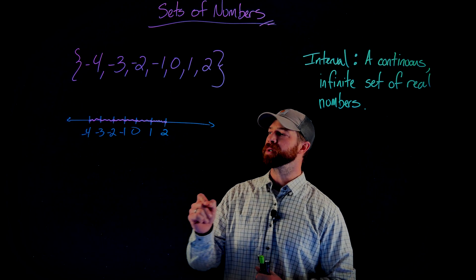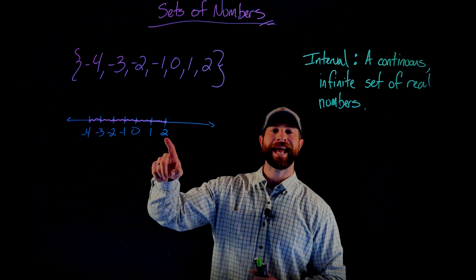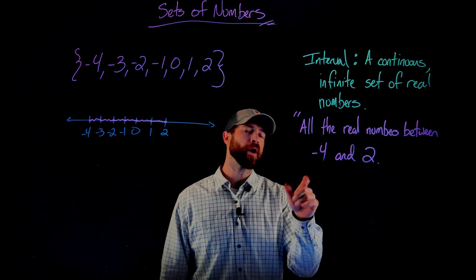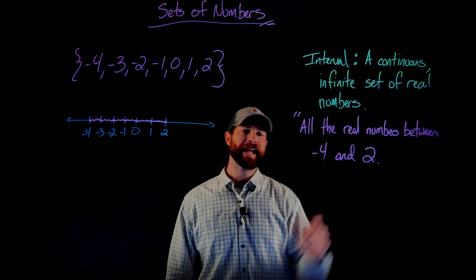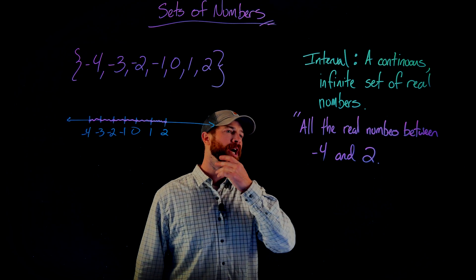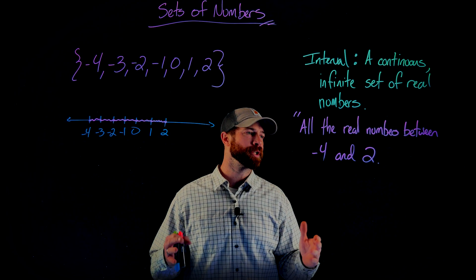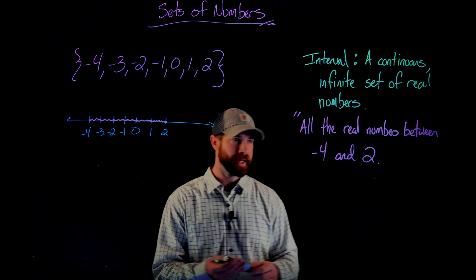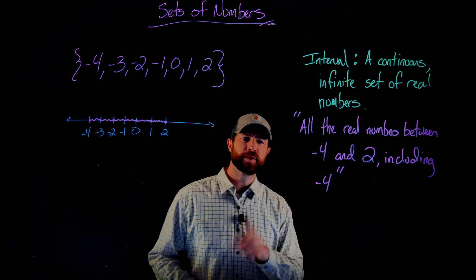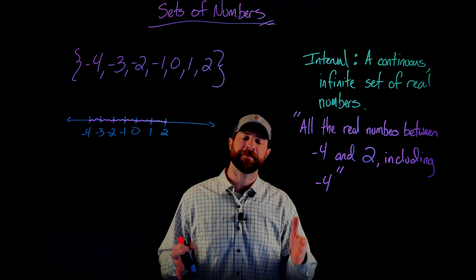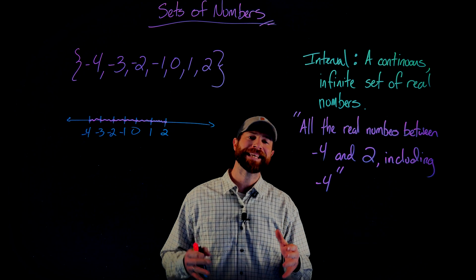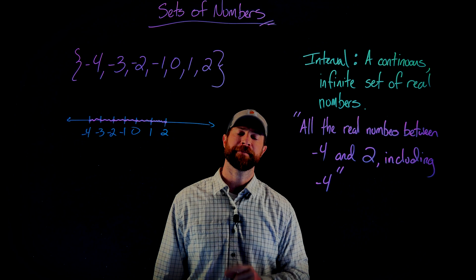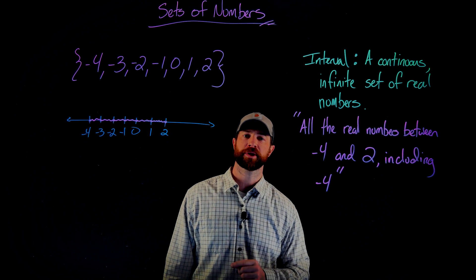I want to describe all the real numbers between negative 4 and 2. There is a little ambiguity with this statement — the question is, do I also want to include negative 4 and 2 in this set? Let's say I want to include negative 4 but not 2. That might seem like a small thing but it's really important. If I say the number is strictly between negative 4 and 2, I haven't said anything about the endpoints. Making sure I want to include negative 4 is actually a very big deal when describing intervals.